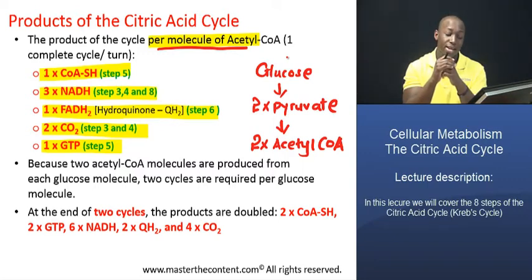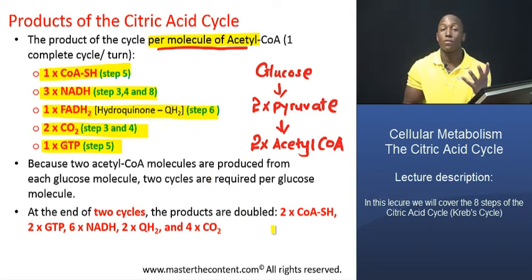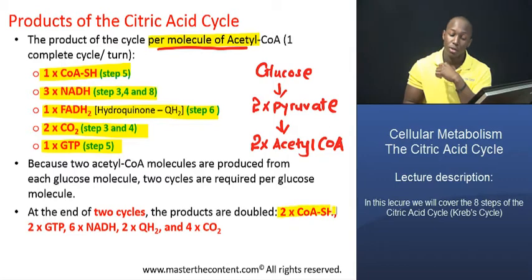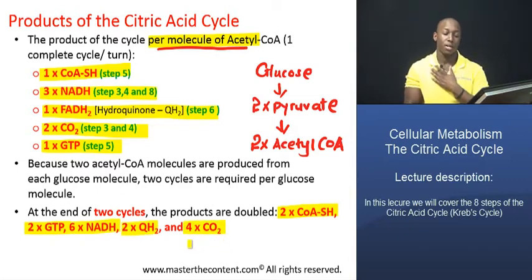When we're talking about two complete cycles per molecule of glucose, the products are obviously doubled. So we have two molecules of coenzyme A, two of guanosine triphosphate, six of NADH, two of hydroquinone or FADH2, and four of carbon dioxide.